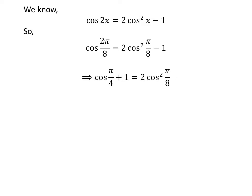Cancelling out the common factor 2 in the numerator and the denominator of 2π/8, and shifting -1 from left hand side to right hand side gives us: cos(π/4) + 1 = 2cos²(π/8).